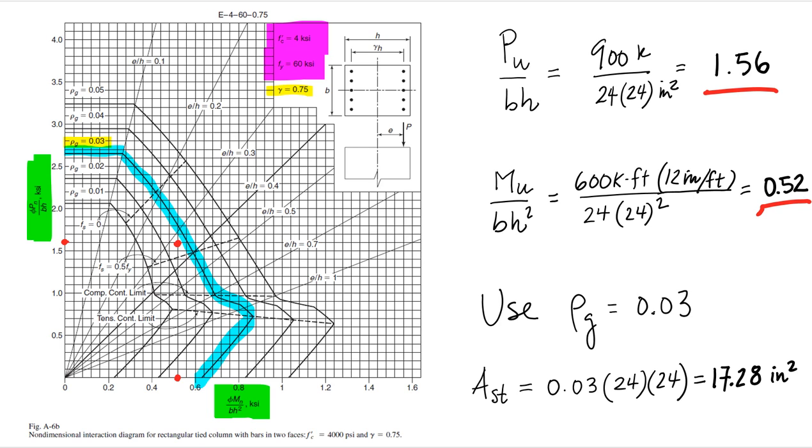And then we try to find a value of rho g, meaning total reinforcement ratio, such that the curve has that point inside of it. So in this case, we could use rho g of 0.03, 0.04 or 0.05. Clearly, we don't want to use a rho g that is larger than what we need strictly. So in this case, we decide for rho g of 0.03, and that is the smallest value that covers the point in our case.